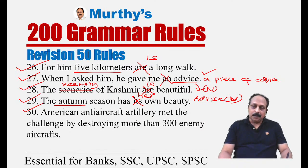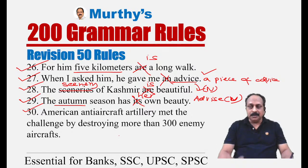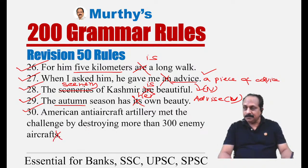Sentence thirty: 'American anti-aircraft artillery met the challenge by destroying more than 300 enemy aircrafts.' Some nouns have the same form in singular and plural — sheep, deer, bison, salmon, trout, cod, offspring, aircraft, spacecraft. We cannot say 'aircrafts.' The correct form is 'aircraft' for both singular and plural. The correct sentence: '...destroying more than 300 enemy aircraft.'